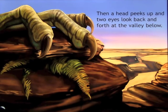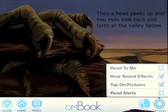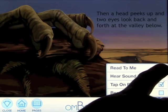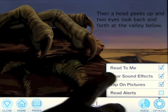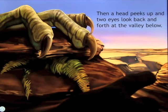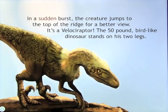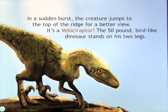Now if you go into Settings very quickly, you can actually turn Read to Me on, and go back out. And then when we turn the page, it reads automatically: 'In a sudden burst, the creature jumps to the top of the ridge for a better view. It's a Velociraptor. The 50-pound bird-like dinosaur stands on his two legs.'